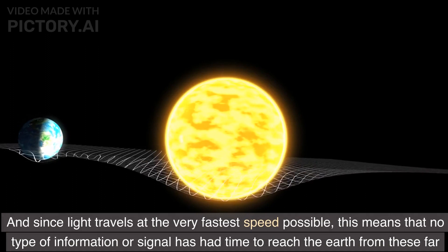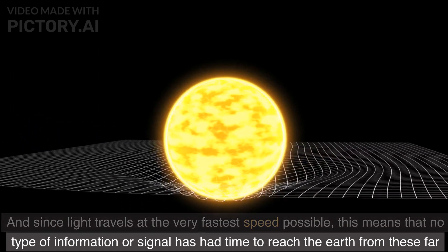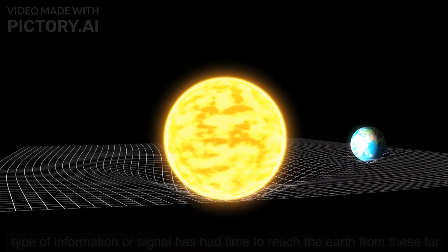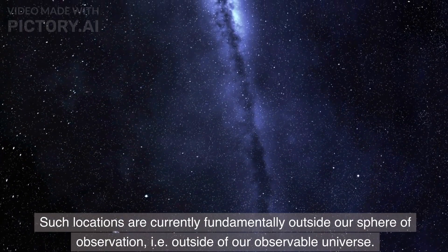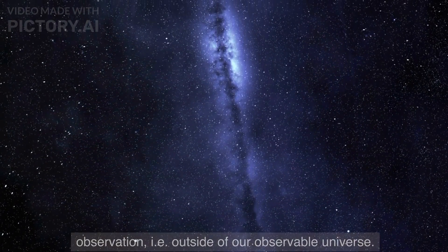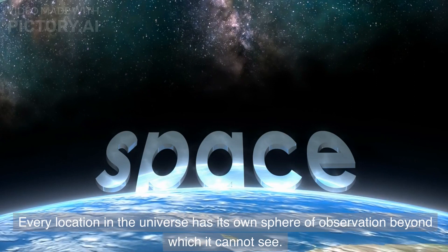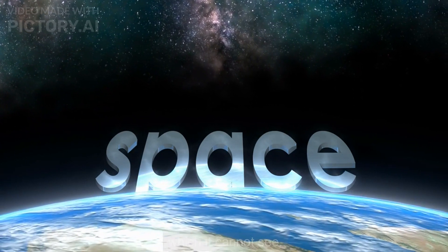And since light travels at the very fastest speed possible, this means that no type of information or signal has had time to reach the Earth from these far away points. Such locations are currently fundamentally outside our sphere of observation, outside of our observable universe. Every location in the universe has its own sphere of observation beyond which it cannot see.